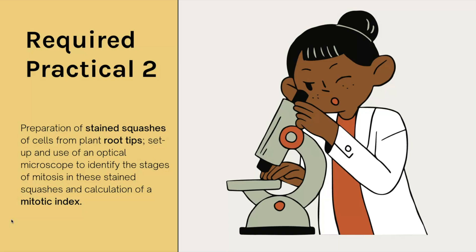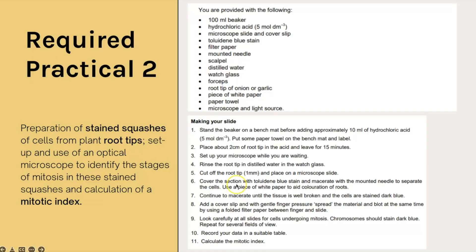Finally, required practical two on paper three: preparation of stained squashes of cells from plant root tips, setup and use of an optical microscope to identify the stages of mitosis, and calculation of mitotic index — quite a few different skills and mathematical elements. Again, the method from the AQA handbook is shown but you're not expected to know a method off by heart. It's about whether you could suggest appropriate apparatus or justify why a particular step was done — testing understanding, not memory.